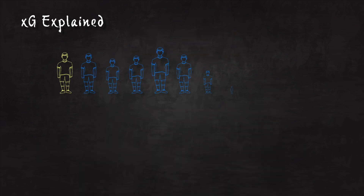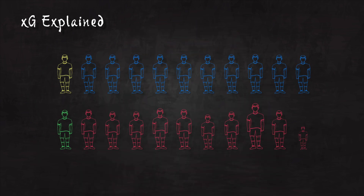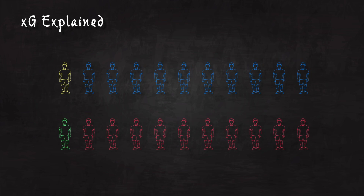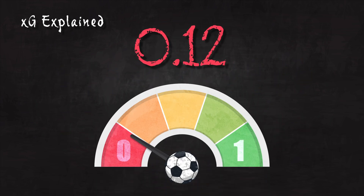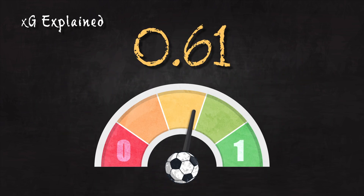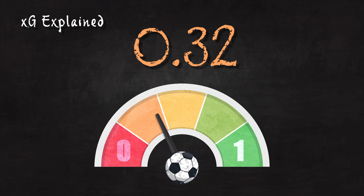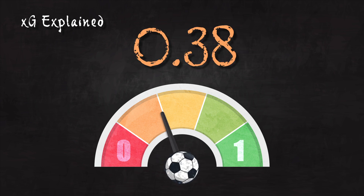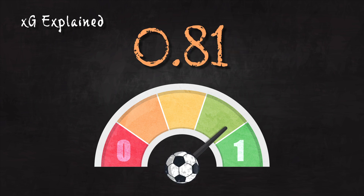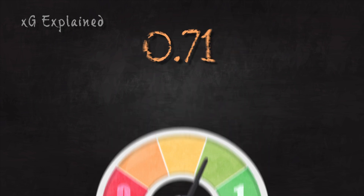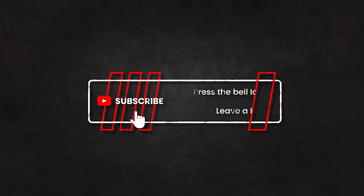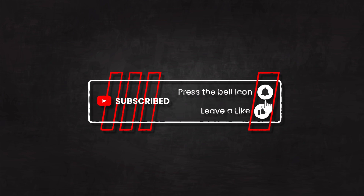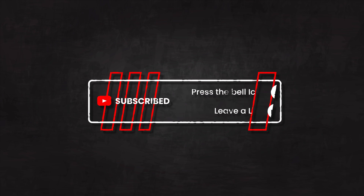A team with more quality players tends to create higher XG. It's measured on a scale of probability from 0 to 1, and teams with higher XG will, in theory, score more goals. And that is the basics about XG. If you liked this video, hit the subscribe button and give us a like, comment, or ask questions below.